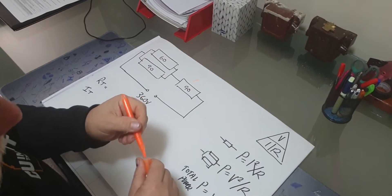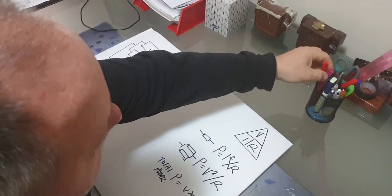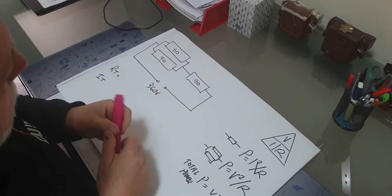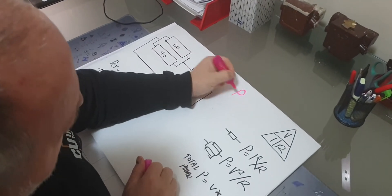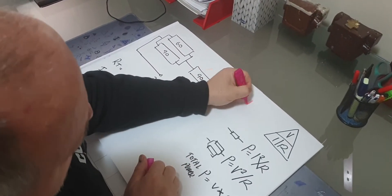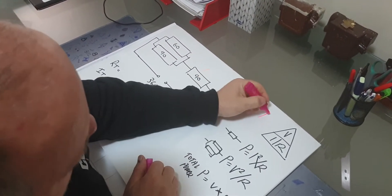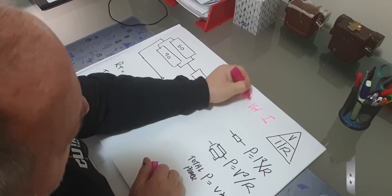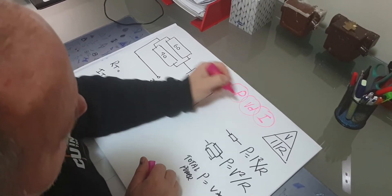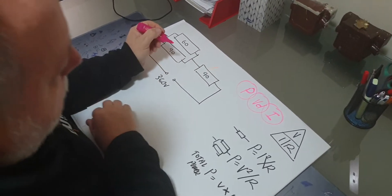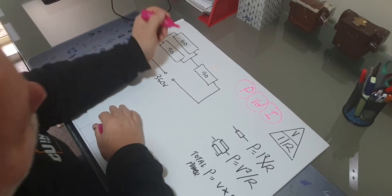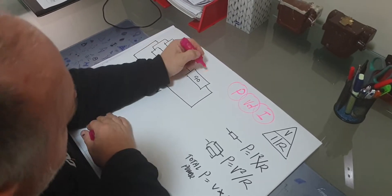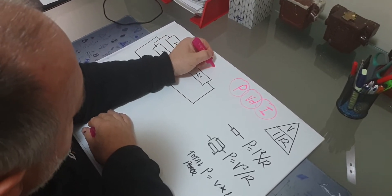They always ask you to find power, they ask you to find voltage drop, and they ask you to find current. Those are the three items they'll get you to find in a series-parallel circuit or some type of DC circuit.